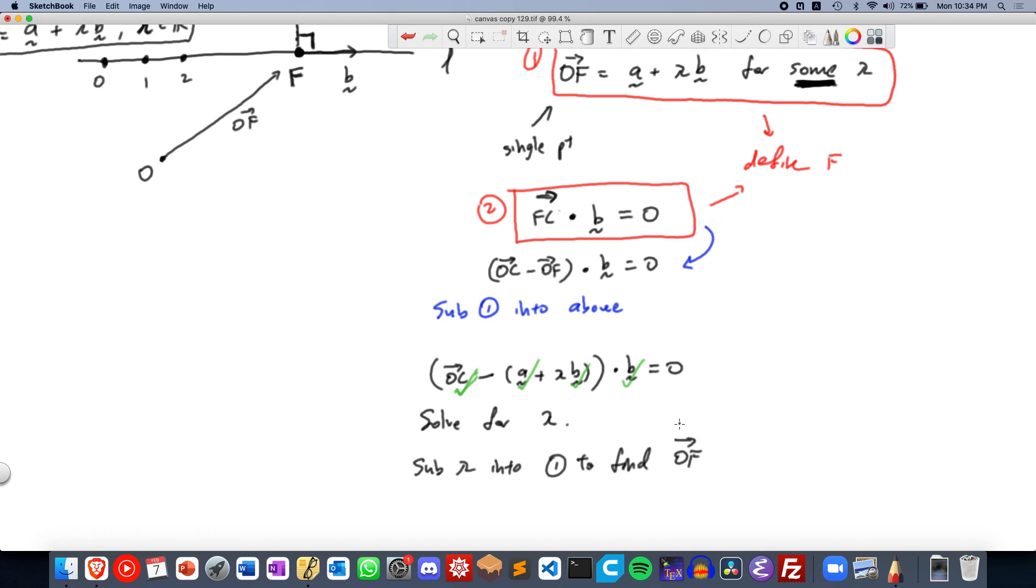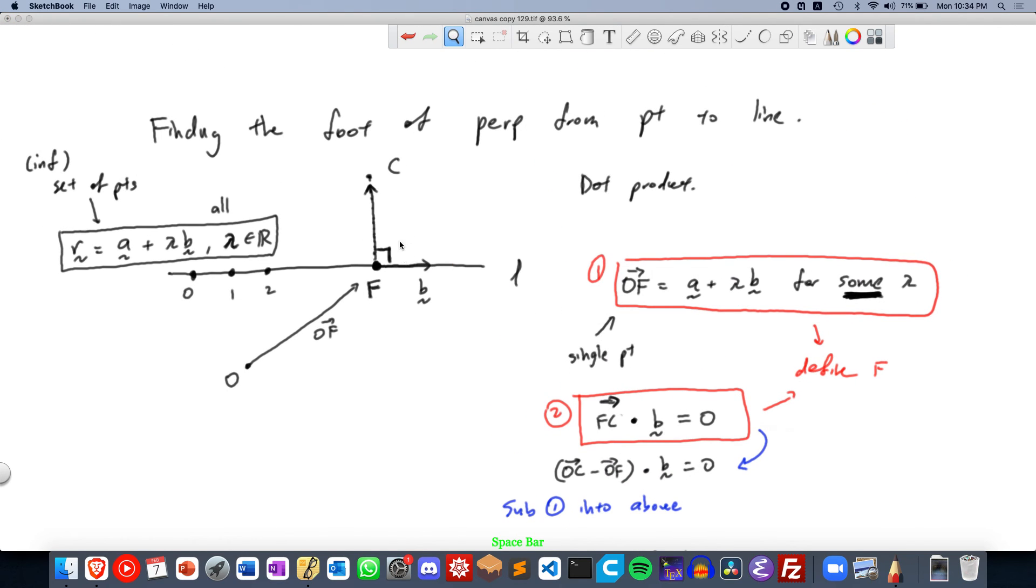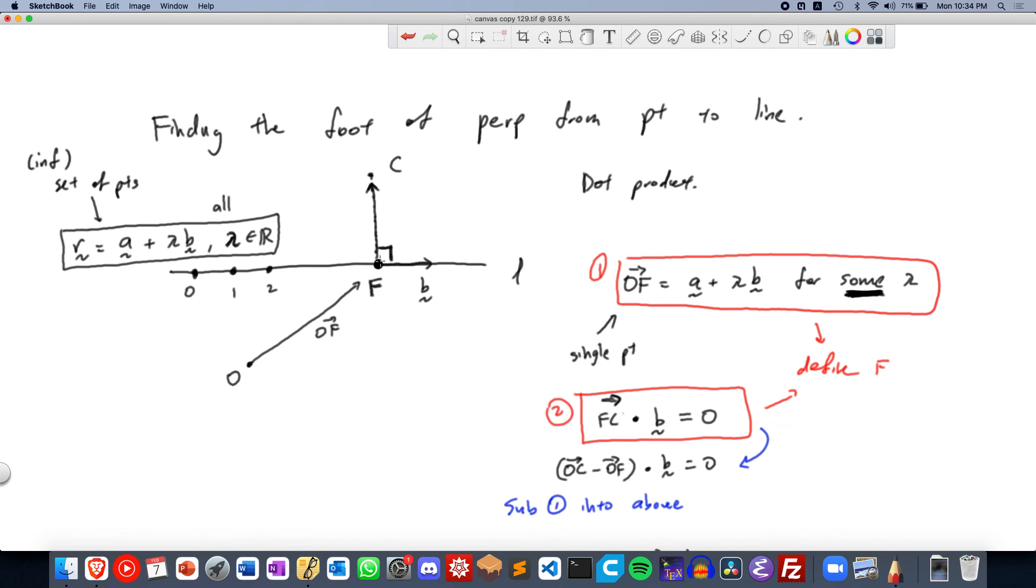And then we have currently found, we have found the goal of finding the position vector, the point that you get when you project C onto the line. So yeah, so that's how you find the perpendicular, how you find the foot of the perpendicular from a point C onto the line L.